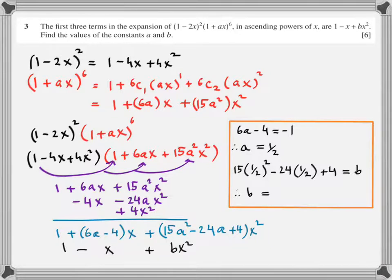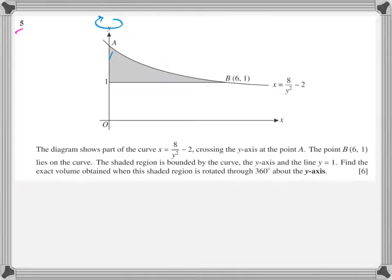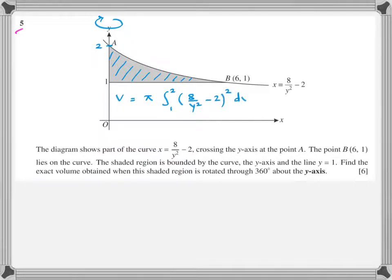Question 5: the diagram shows part of the curve crossing the y-axis at point A. To find the coordinate of A, set x equal to zero. This time it's volume of revolution rotated about the y-axis. When rotating about the y-axis, the limits are on the y-axis and the expression is in terms of y. You cannot apply the chain rule because it's not a linear expression, so you have to multiply it out.